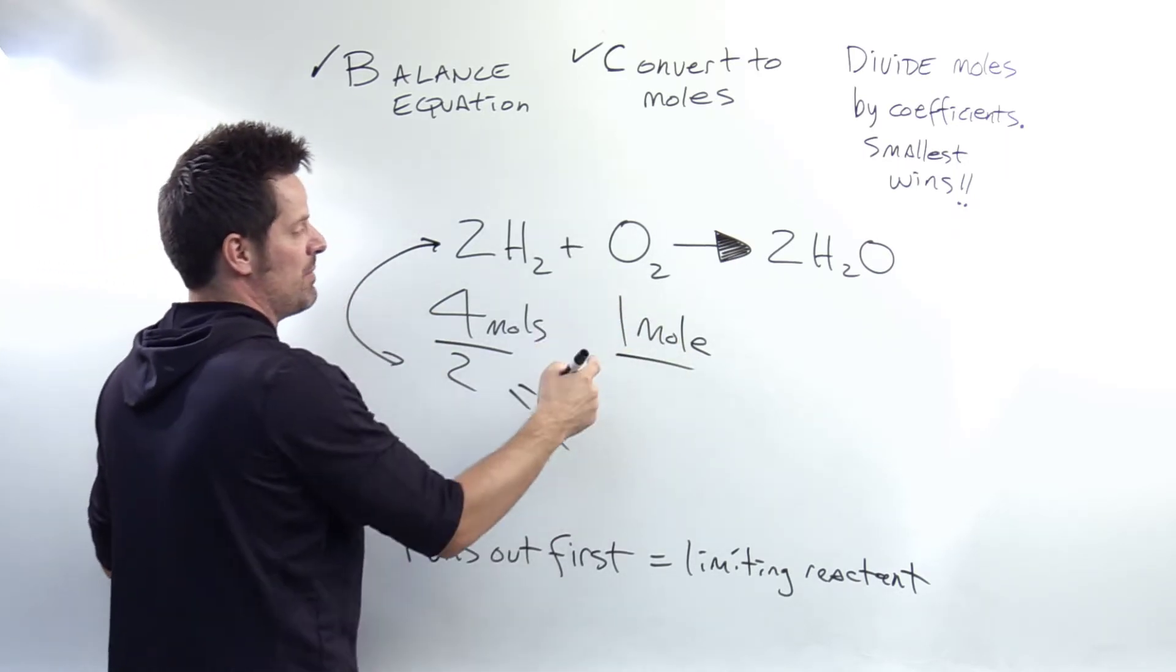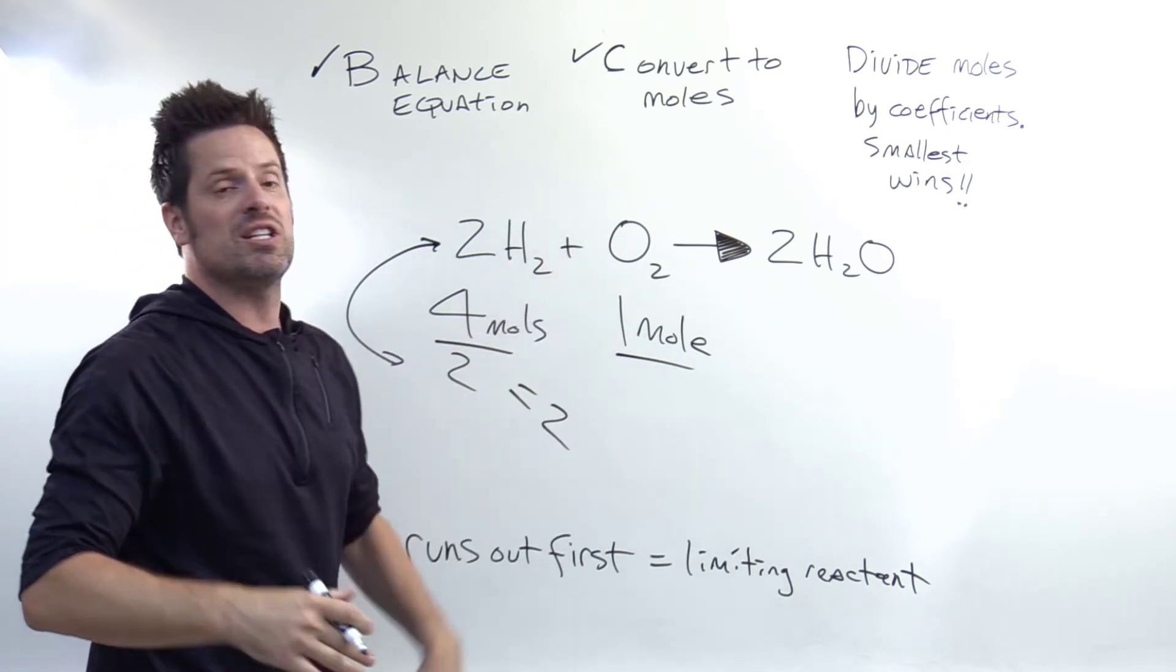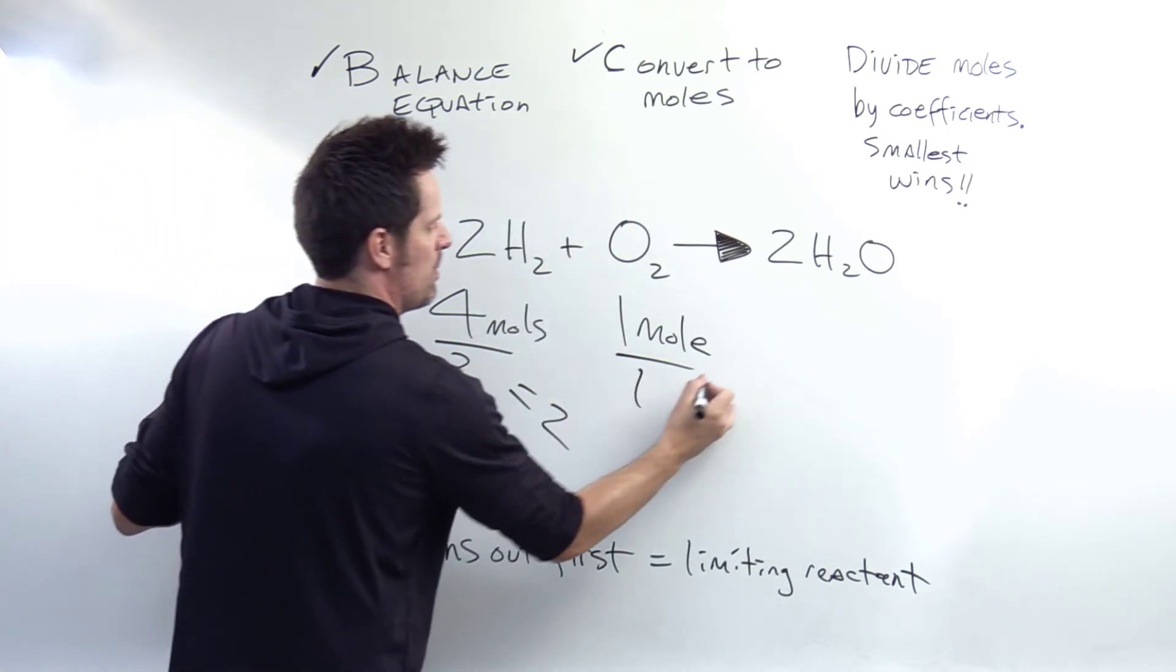Here I've got one mole of O2. I'm going to divide it by the coefficient next to the O2. There's no number written here so it's an understood 1. So 1 divided by 1 is equal to 1.